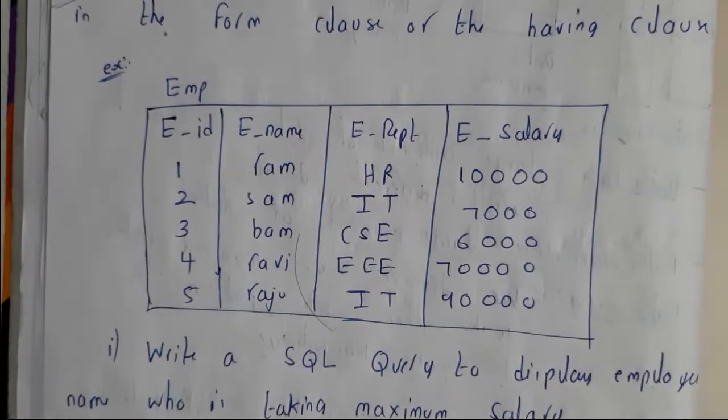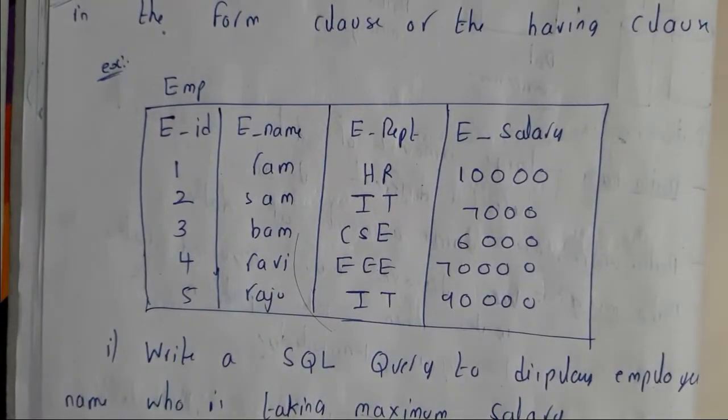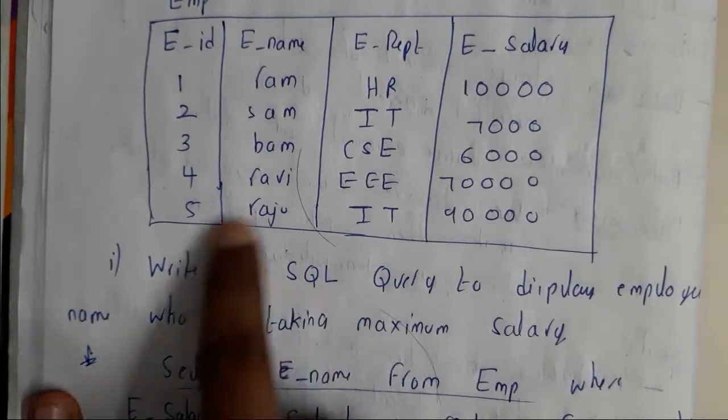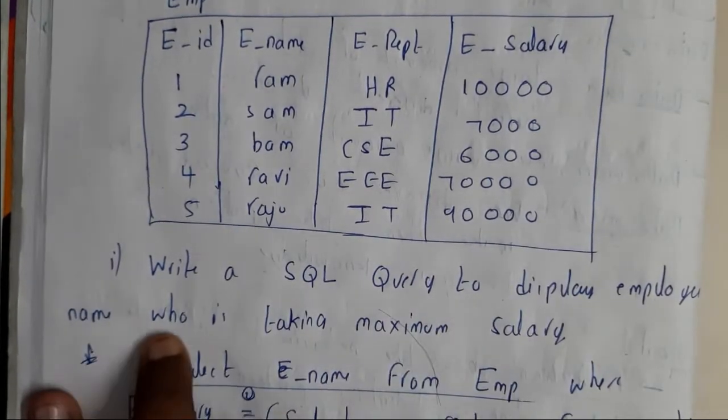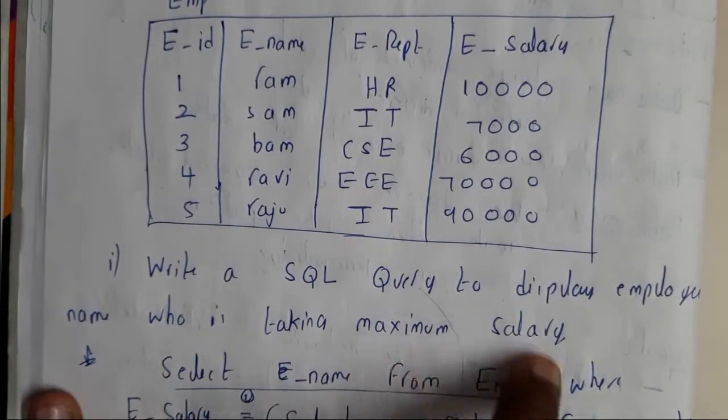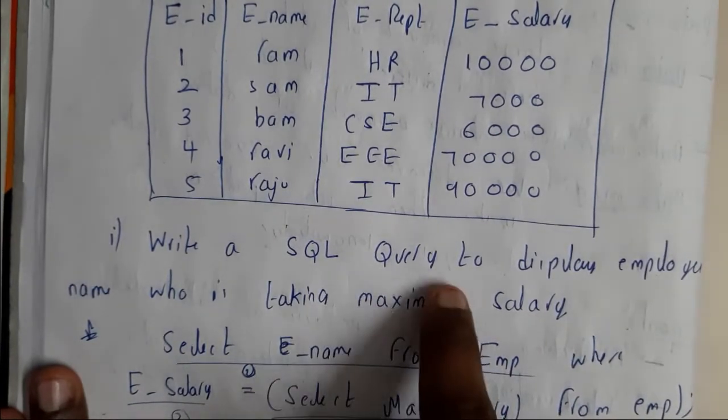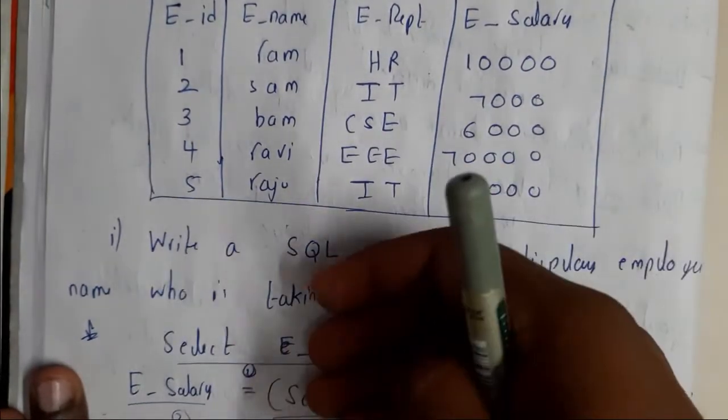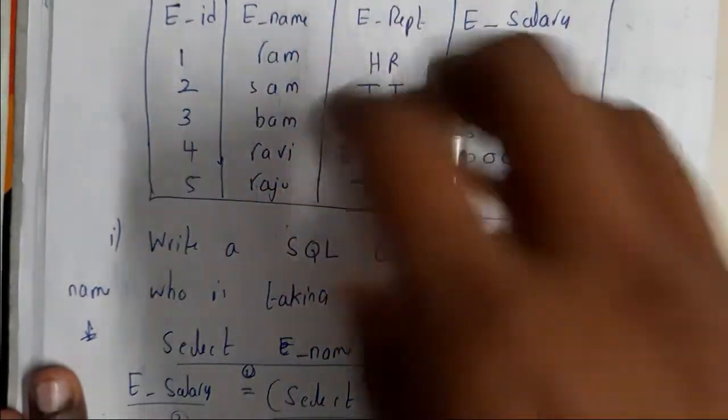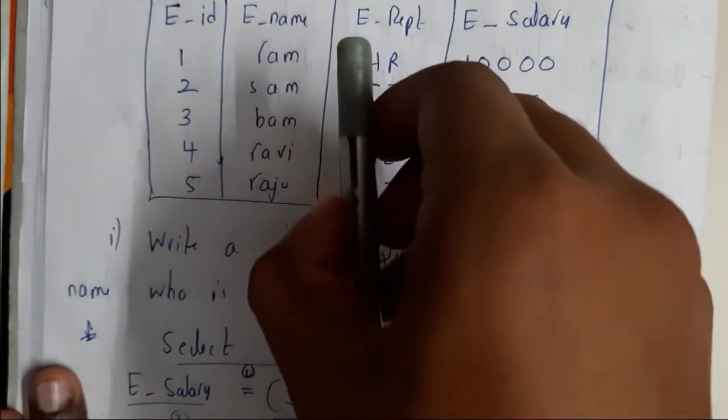Let's take a small example. Write a SQL query to display the employee names who is taking the maximum salary. We need to display the employee who is taking the maximum salary. First we need to select the guy who is taking maximum salary, then we need to display that guy's name.